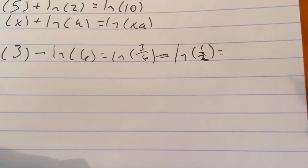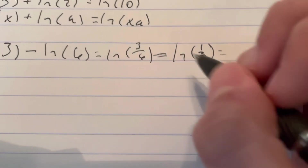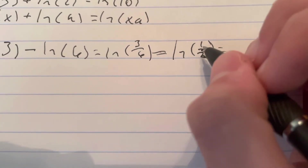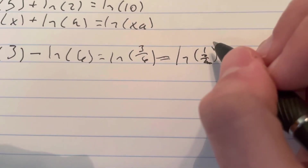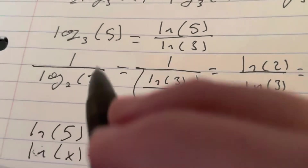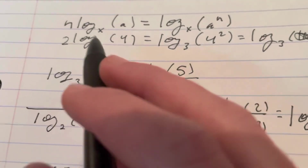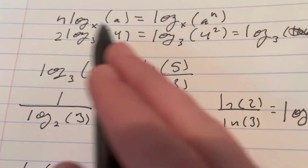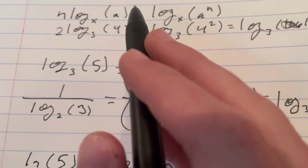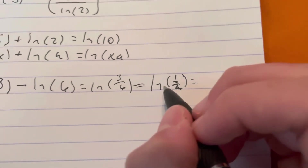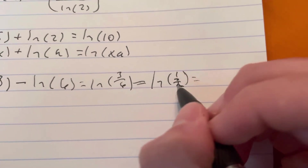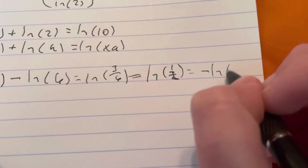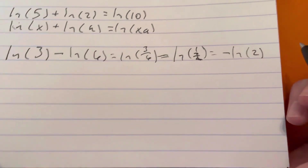If you remember the property of a logarithm that says n goes to the power of a, this is the same as saying the natural log of 2 to the power of negative 1, which means we can just write that as negative natural log of 2.